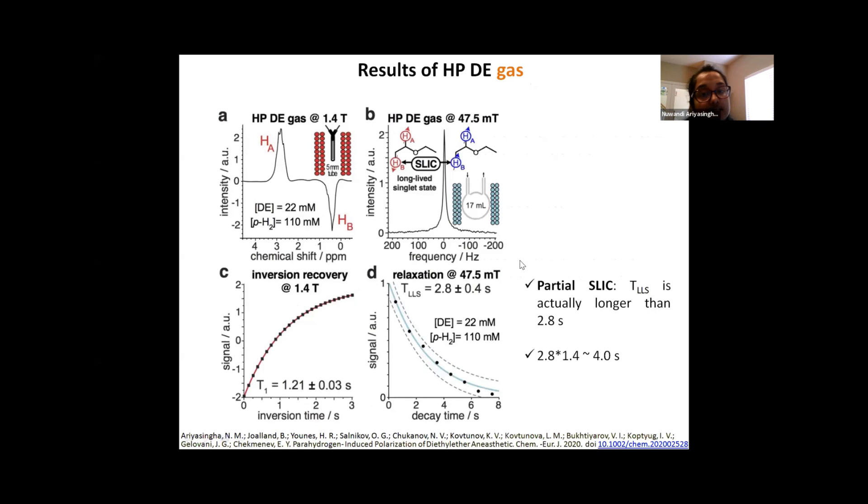So these are the results of the diethyl ether gas. The plot A shows the typical hyperpolarized spectrum acquired at the 1.4 tesla. And its inversion recovery data suggests a T1 of 1.2 seconds. And the plot B here is the SLIC spectrum of diethyl ether gas at the low field. And it shows the relaxation data. So by fitting the data, we obtained TLS of around 2.8 seconds. But since this was done using partial SLIC, the actual TLS should be even longer than this, which using the correction factor, we obtained a value of 4 seconds. So we can clearly see the long-lived spin states of hyperpolarized diethyl ether gas can indeed be produced by using this approach.